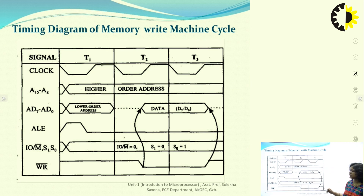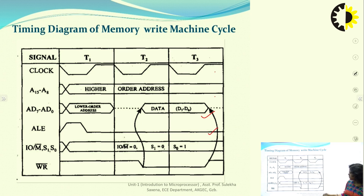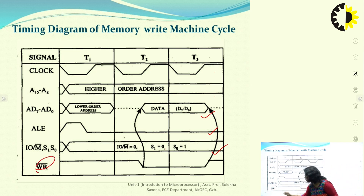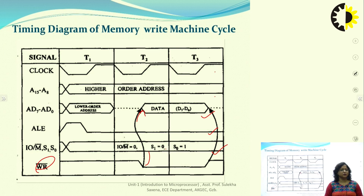The timing diagram for memory write cycle is the same as memory read, except S1 = 0, S0 = 1 and W̄R̄ replaces R̄D̄, going low during T2 and T3 while data is available on the data bus. I hope these three machine cycles — opcode fetch, memory read, and memory write — are clear. In the next lecture we will continue with IO read, IO write, and interrupt acknowledgement machine cycles. Thank you.